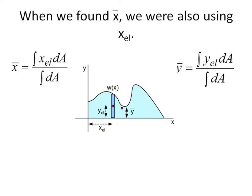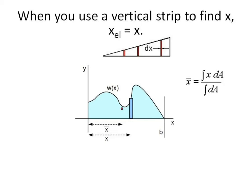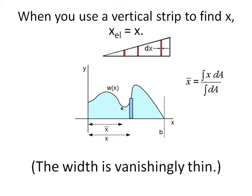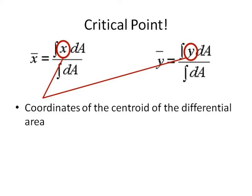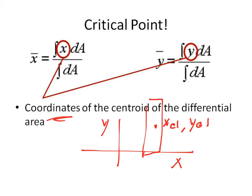Now notice, when we found x bar, we were also using xEl. It's just that here, xEl is equal to x. If you use a vertical stripe to find x, that's true, because the width is vanishingly thin. So x bar for this piece right here is the same as x. So this term, x equals xEl. When I find y bar using a vertical element, yEl is not the same as y. So my function would be y, but my yEl is only half of that. So the critical point here is that these integrands, x and y, have to be the coordinates of the centroid of the differential area. You have a coordinate system. Find me where this point is, so that point is the centroid of your differential element.